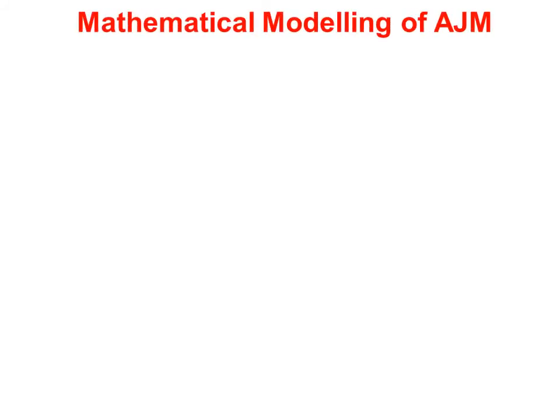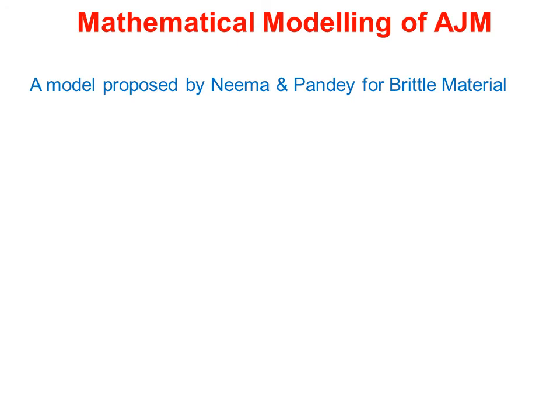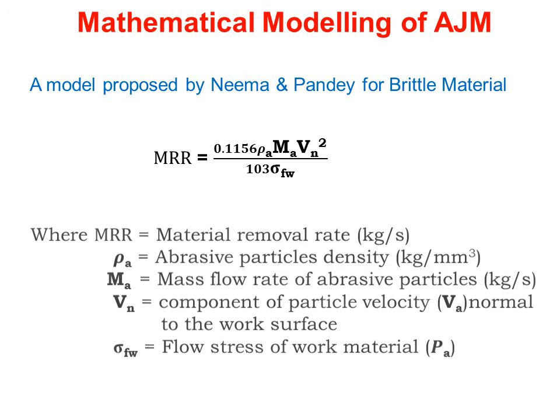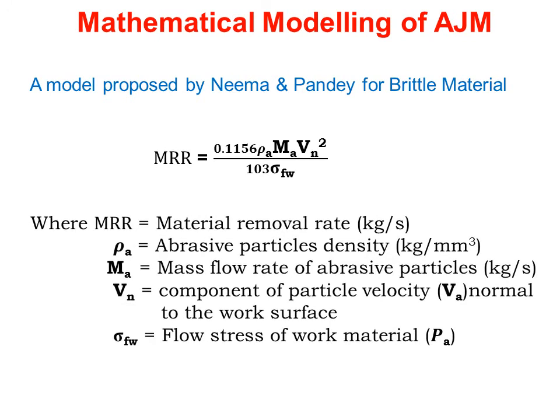The mathematical modeling of AJM: a model proposed by Neema and Pande for brittle material gives MRR equal to 0.1156 × ρA × MA × Vn² divided by 10³ × σFw. Where MRR is material removal rate in kg per second, ρA is abrasive particle density in kg per mm cube, MA is mass flow rate of abrasive particles in kg per second, Vn is component of particle velocity normal to the work surface, and σFw is flow stress of work material.